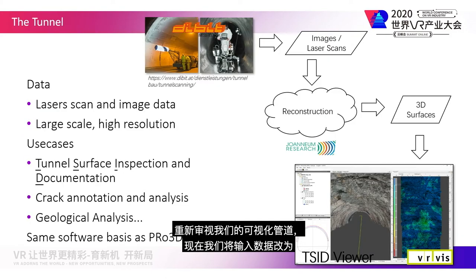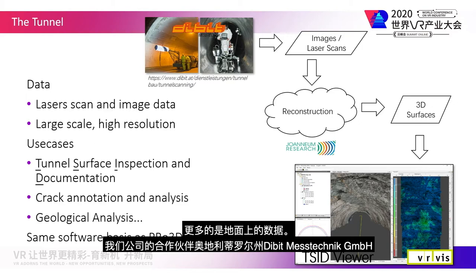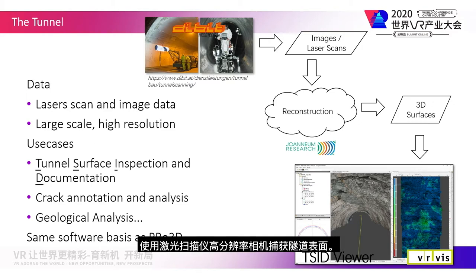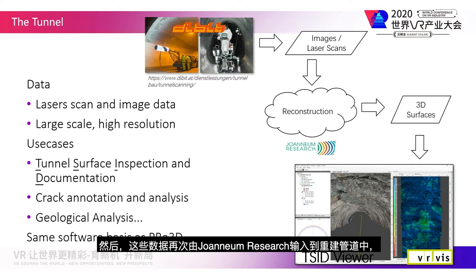In revisiting our visualization pipeline, we now change the input data to something more terrestrial. Our company partner, Dbid Messtechnik GmbH in Tyrol, Austria, uses laser scanners and high-resolution cameras to capture tunnel surfaces. This data is then again fed into the reconstruction pipeline by Johann Neum Research.